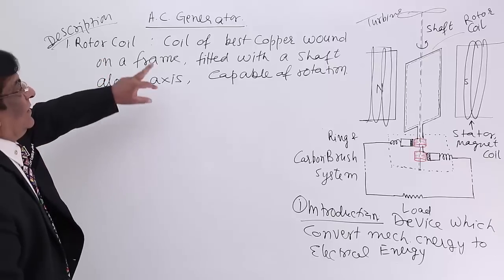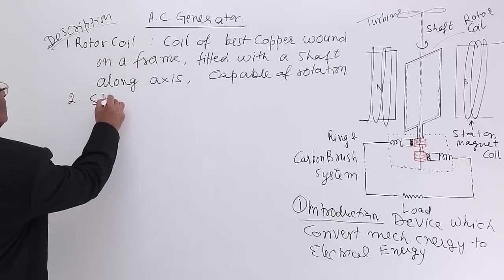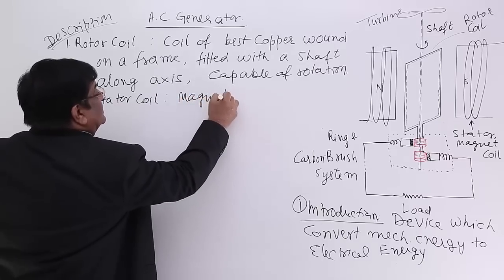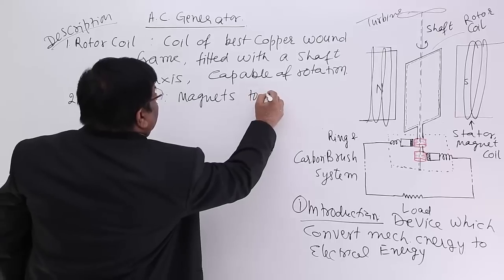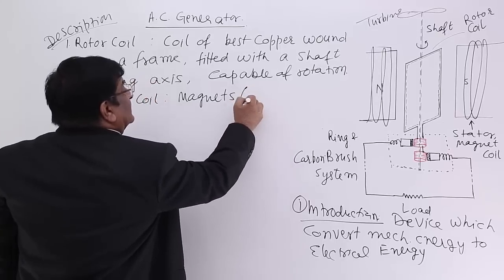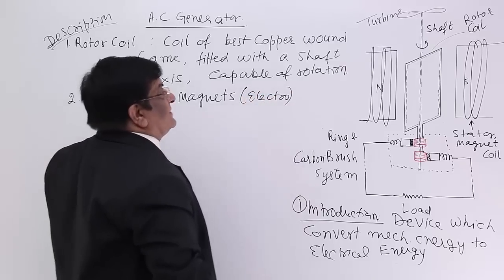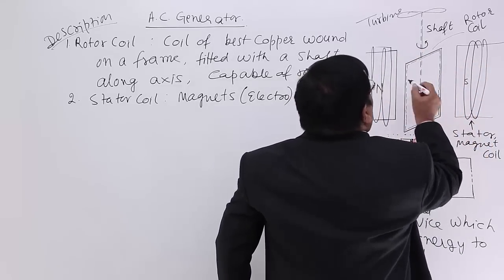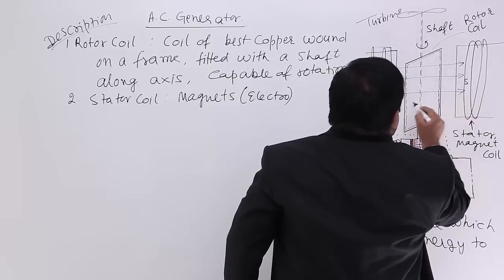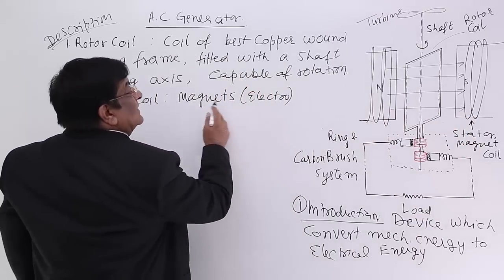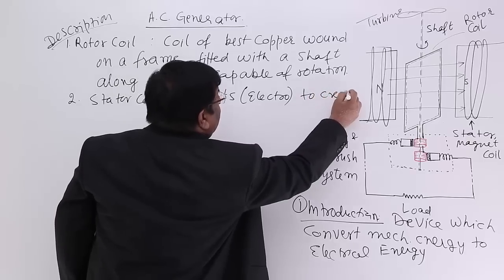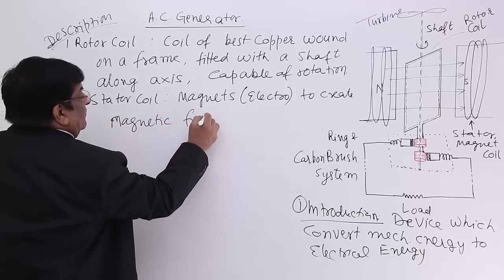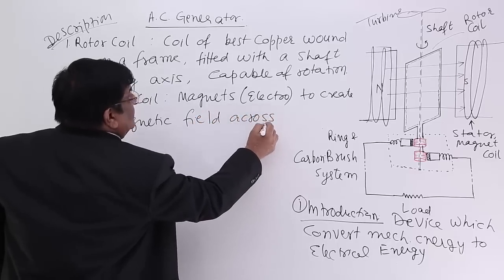Component number one is the rotor coil. Component number two is the stator coil — these are magnets, permanent magnets to create a magnetic field. These magnets are electromagnets because electromagnets are very strong. We have two iron pieces with a winding on them, and when current flows through them there is a strong magnetic field. So electromagnets create the magnetic field across the coil.